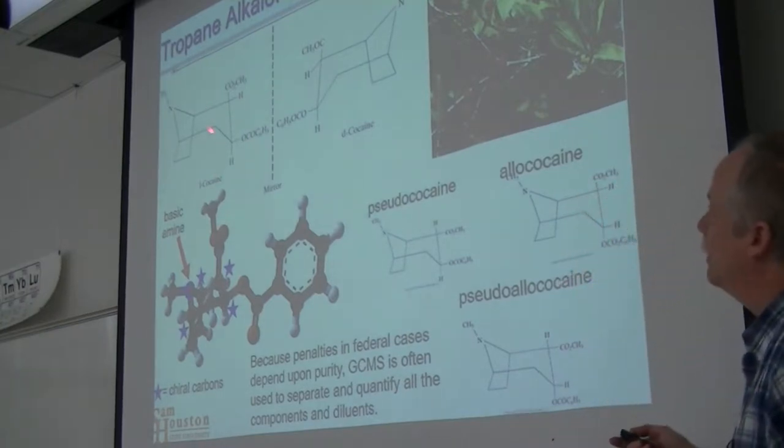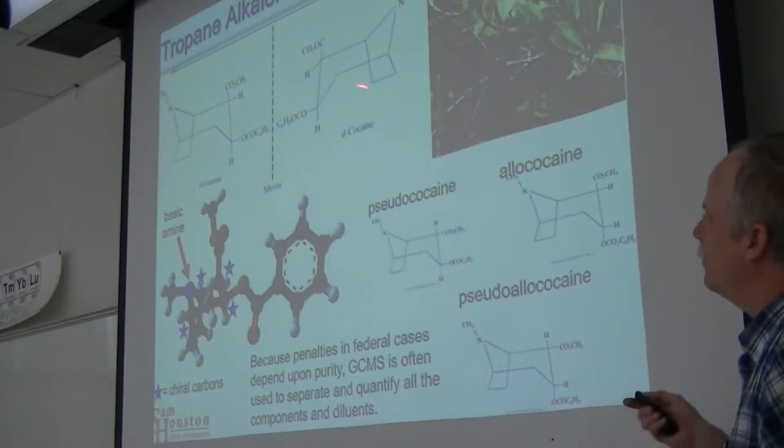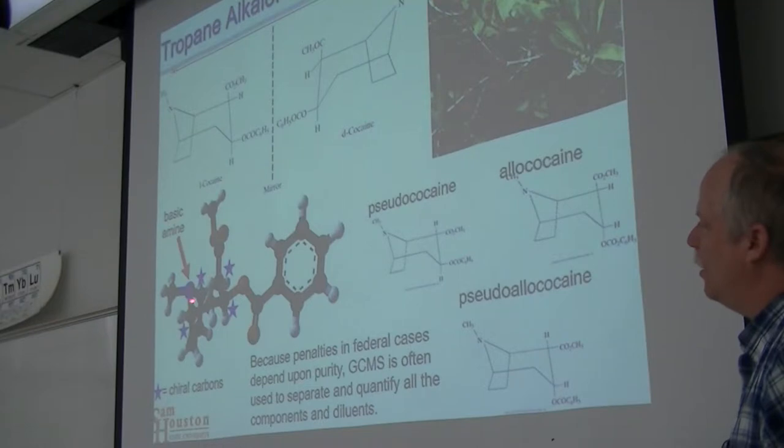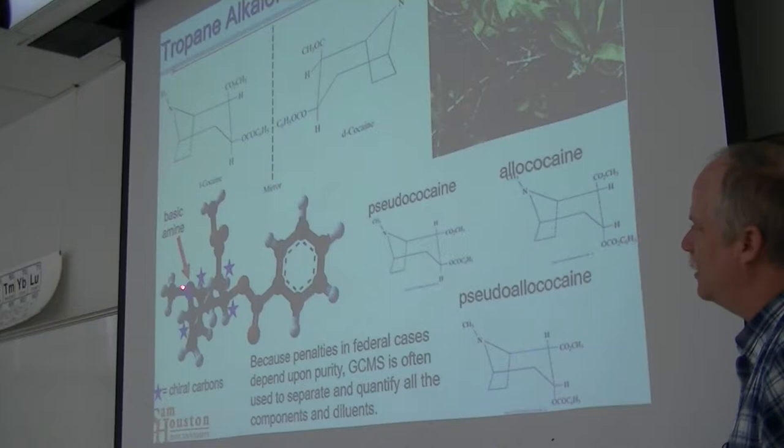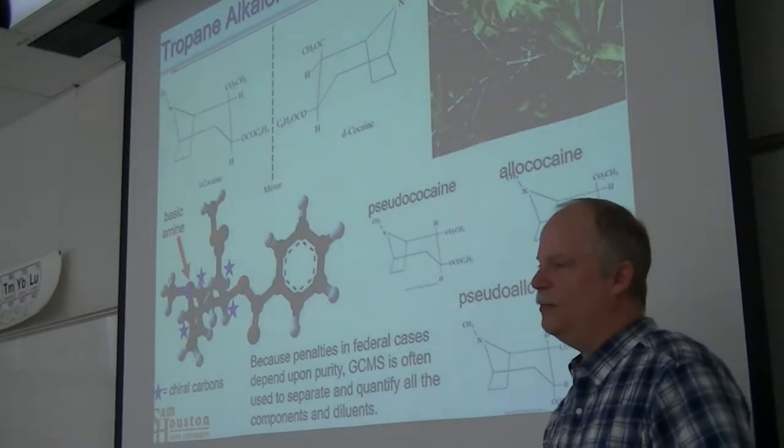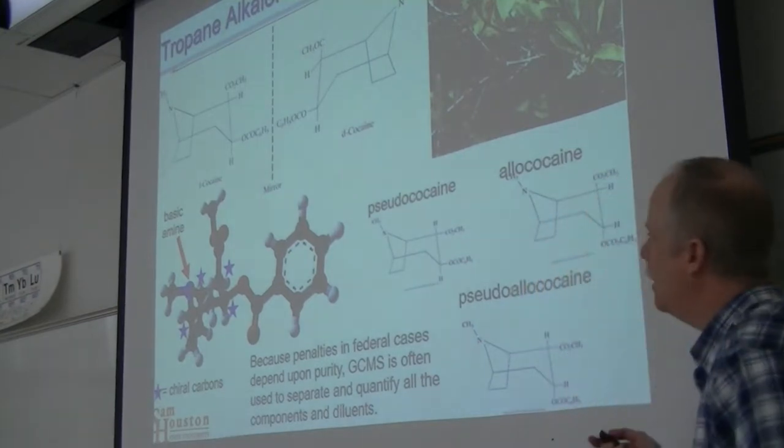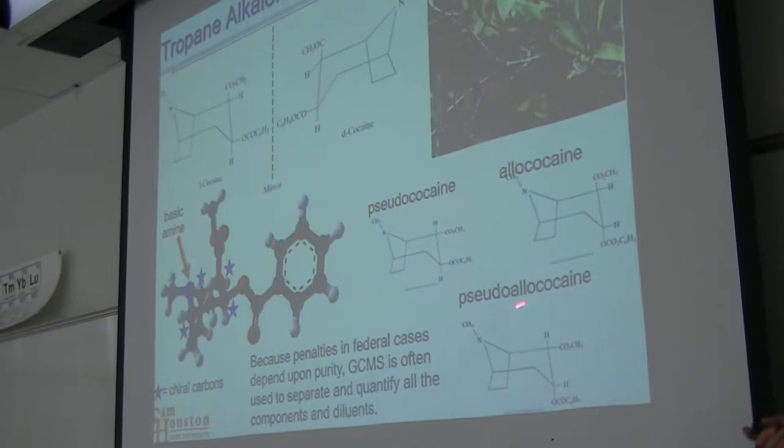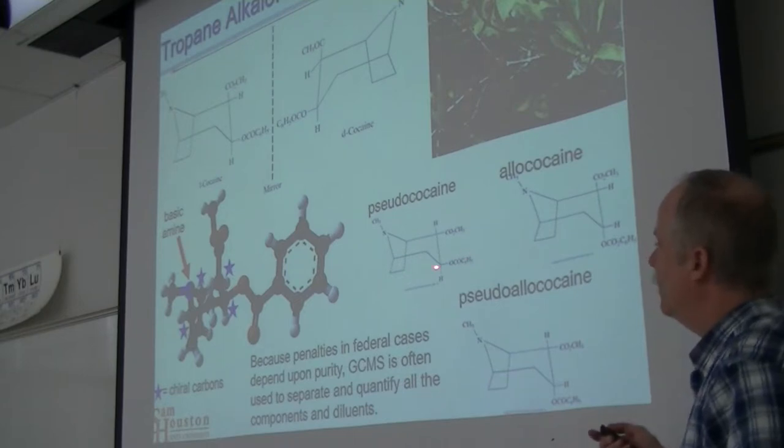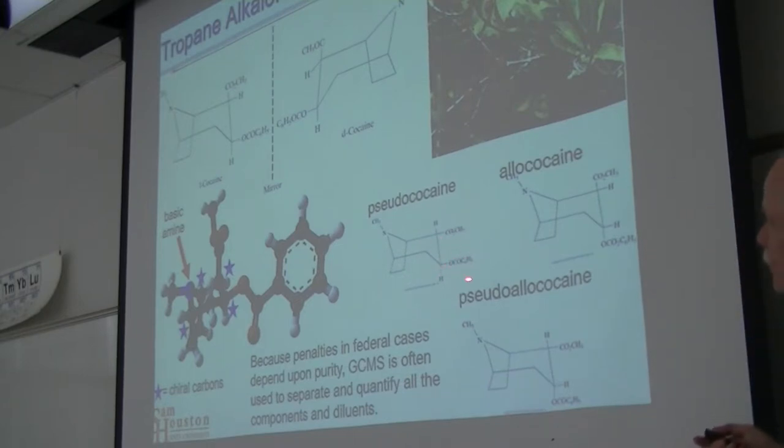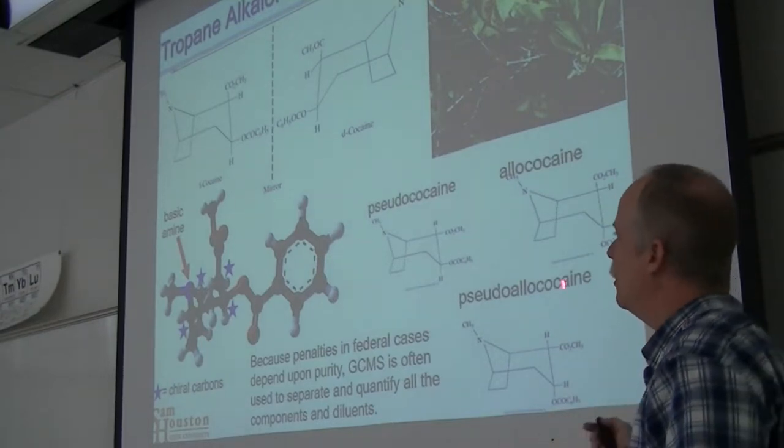Here's the tropane ring, this alkaloid - cocaine and various versions of cocaine. Here's that tropane ring where I put stars on all of the chiral carbons. It also has a basic amine. You may see pseudo-cocaine, allocaine, or pseudo-allocaine. If you look at the structures, they're all the same except for the chiral centers - equatorial versus axial positions for this acid ester.